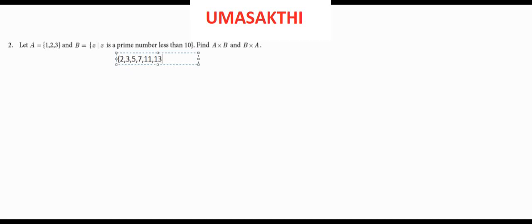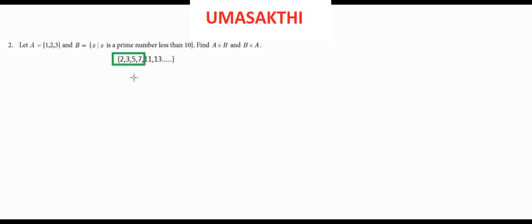So we can choose prime numbers less than 10. If you choose less than 10, then the values are 2, 3, 5, 7.